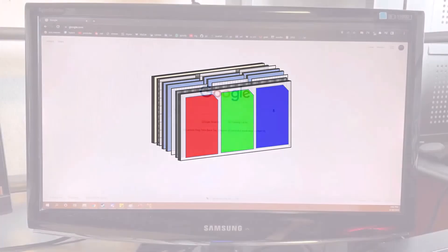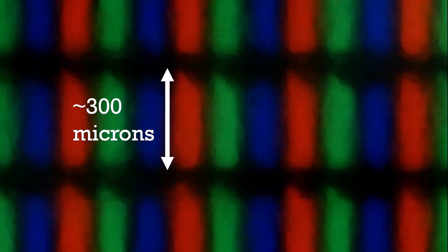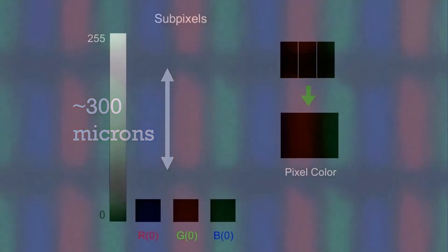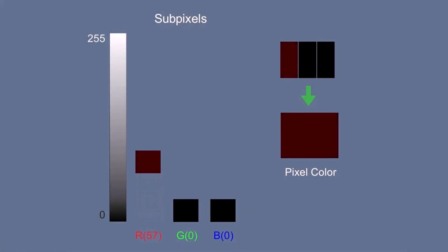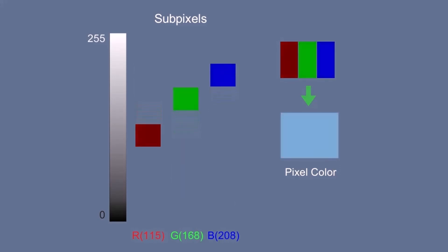But how do a separate red, green, and blue subpixel create white? Or any color on this display? Remember when we zoomed in on our screen to see the subpixels? These subpixels are actually around 300 microns tall. That's tiny. Because they're so small, our eyes blend them into being a single color. So by changing the intensity of the light passing through each pixel, we can essentially blend the colors, like so.